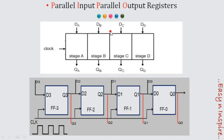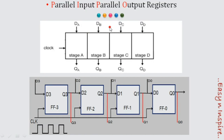This is the block diagram of the parallel input parallel output shift register. I am considering a four-bit shift register to store four-bit data, so I am taking four flip-flops. The number of bits to be stored is equal to the number of flip-flops required — three flip-flops for three bits, five for five bits.